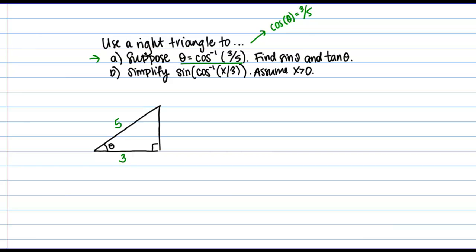Now my ultimate goal is to find sine of theta and tangent of theta, and I'm going to be able to do that based on this triangle that I've set up. But before I can actually find those values I need to find the other leg of my triangle here, the opposite side. And now we can find that side using Pythagorean theorem.